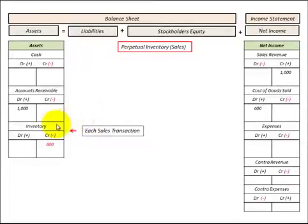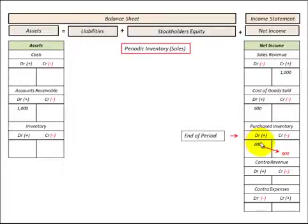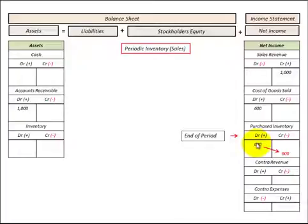The first way we account for inventory is by reducing inventory, say at $600, which is an asset on the balance sheet, and then the related charge goes directly to cost of goods sold, which is an expense on the income statement. The second way would be to accumulate purchased inventory for those sales in an inventory account directly on the income statement, and then at the end of the period, close that account and move it up into cost of goods sold.